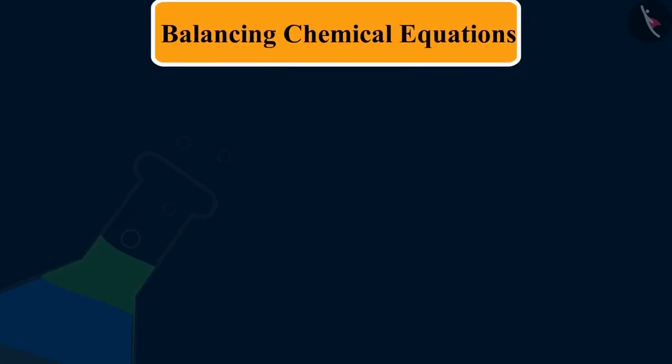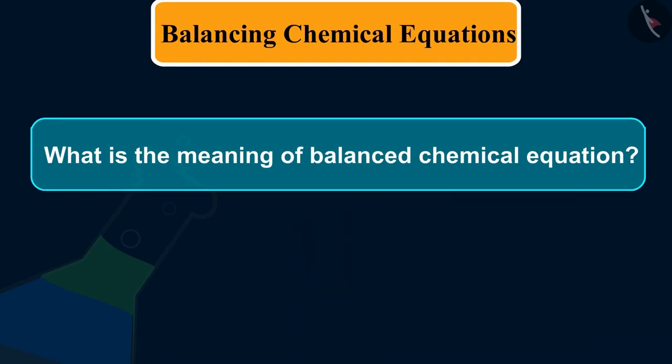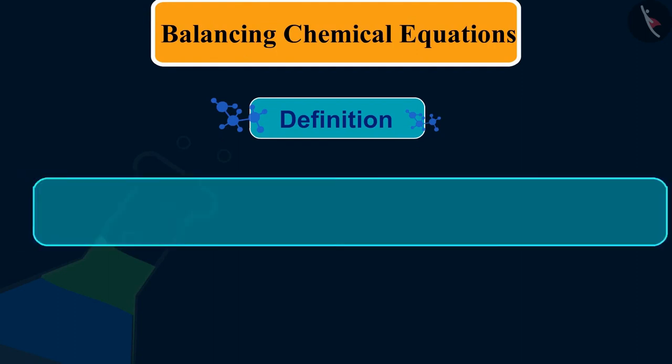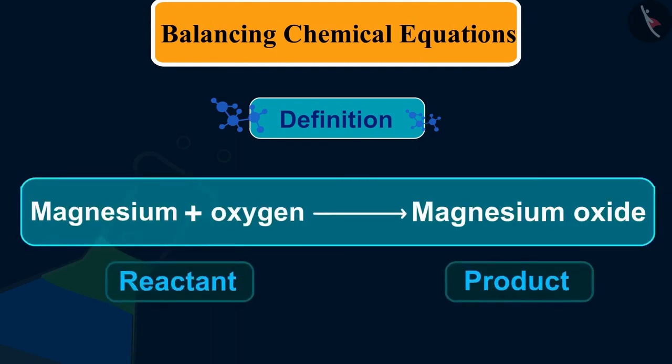First we will understand what is the meaning of a balanced chemical equation. A balanced chemical equation is one which has the same number of atoms of elements on both sides of the equation.